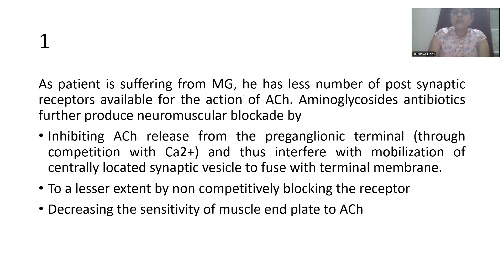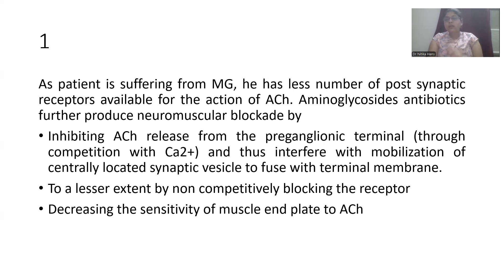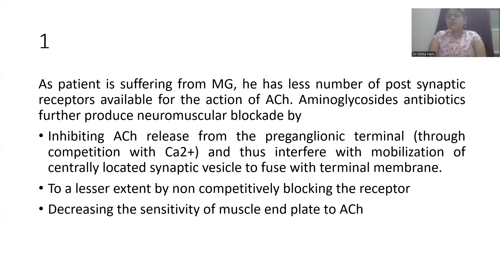As the patient is suffering from myasthenia gravis, he has fewer post-synaptic receptors available because antibodies attach to these nicotinic receptors, so the action of acetylcholine is less. Aminoglycosides produce further neuromuscular blockade. They inhibit acetylcholine release from the pre-junctional terminal through competition with calcium, thus interfering with mobilization of centrally located synaptic vesicles to fuse with the terminal membrane. They also, to a lesser extent, non-competitively block the nicotinic receptor.